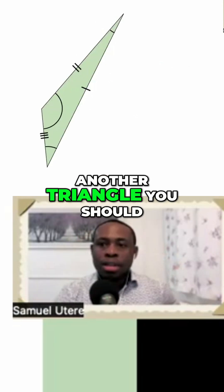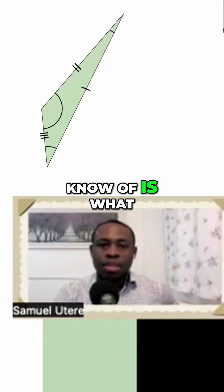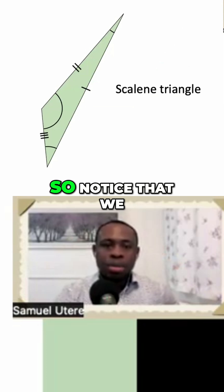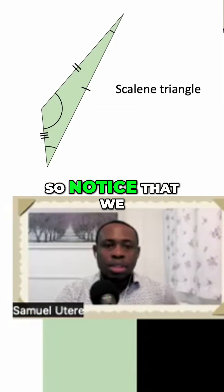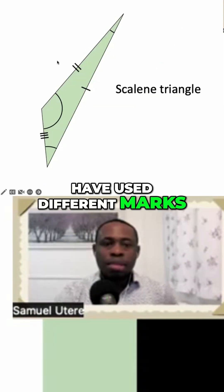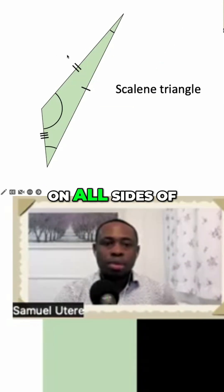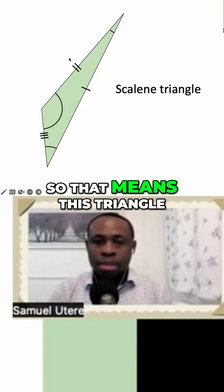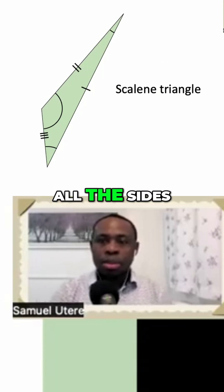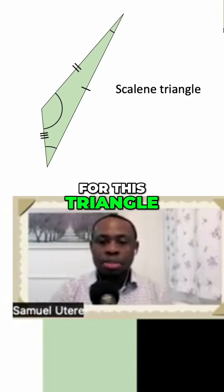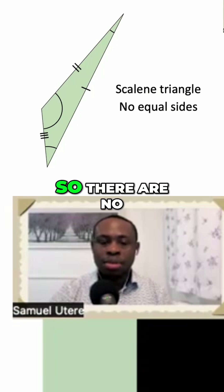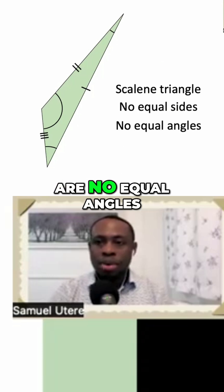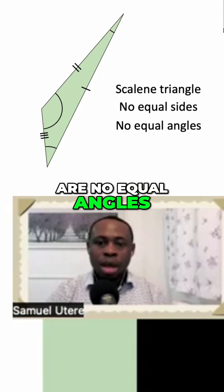Another triangle you should know of is what we call a scalene triangle. Notice that we have used different marks on all sides of the triangle, meaning all the sides are not equal. So there are no equal sides and there are no equal angles.